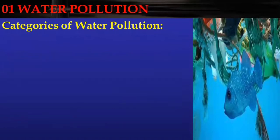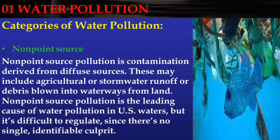The first category of water pollution is non-point source pollution. Non-point source pollution is contamination derived from diffuse sources. This may include agriculture or storm water runoff, or debris blown into waterways from land. Non-point source pollution is the leading cause of water pollution in U.S. waters, but it's difficult to regulate since there's no single identifiable culprit.